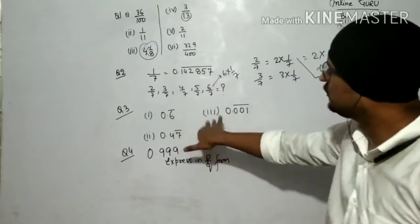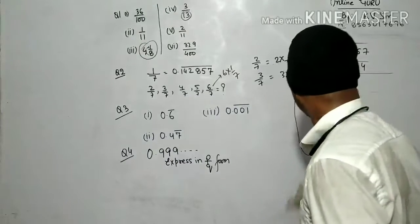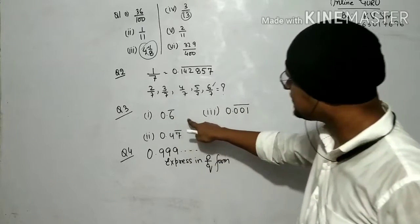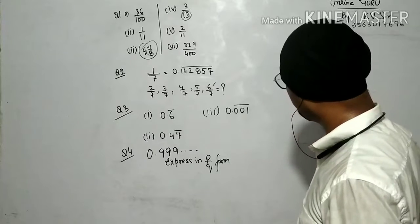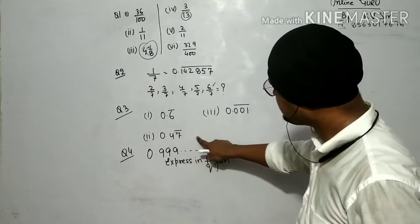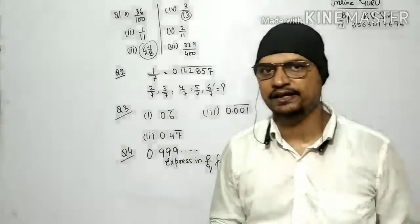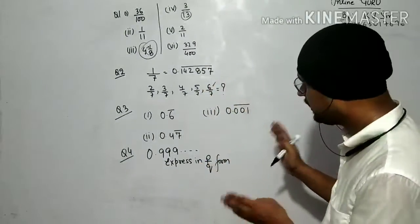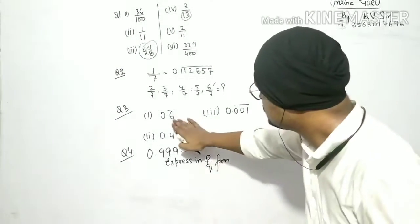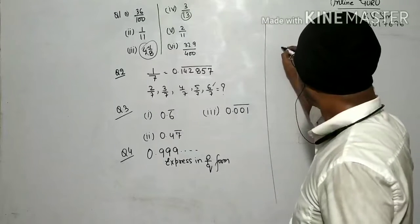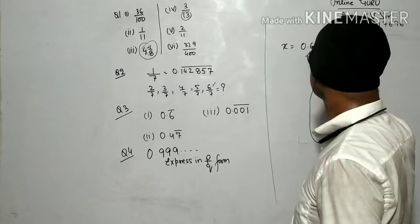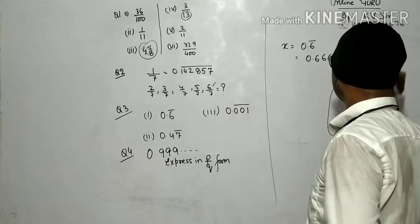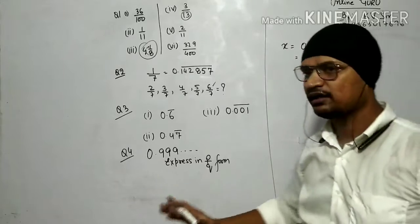Now the next questions — I think all three are important so I will discuss all three. What does 0.6̄ mean? It means 0.66666... What does 0.̄0̄0̄1̄ mean? It means 0.001001001... What does 0.47̄ mean? It is 0.4777..., because the bar is only on the 7, not on 34. So only the digit under the bar repeats. So 0.6̄ means 0.6666666 — that is the meaning.